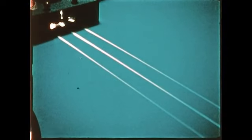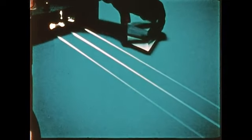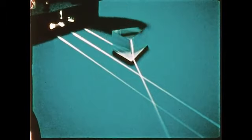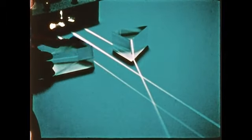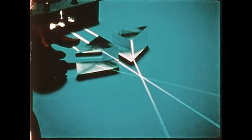But two prisms, arranged base to base, can make the light rays cross. They can focus three rays to a single point.